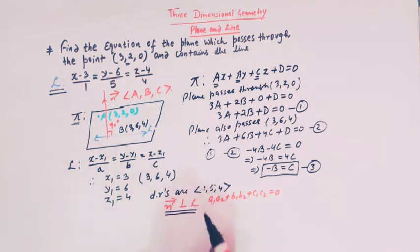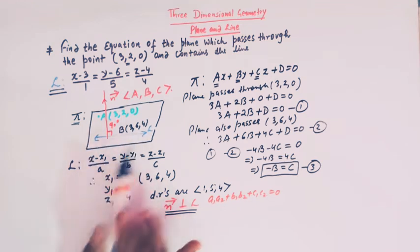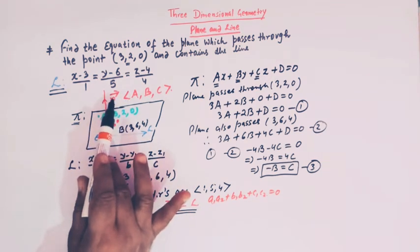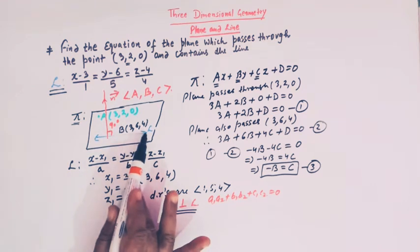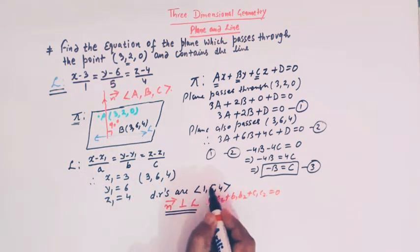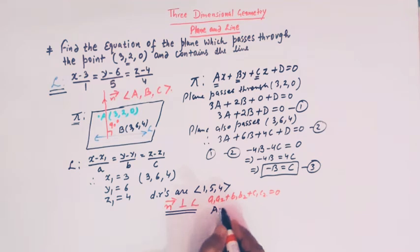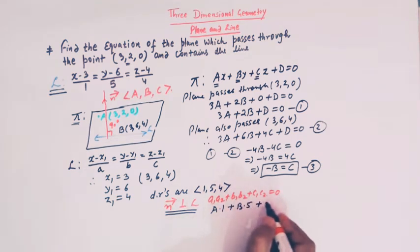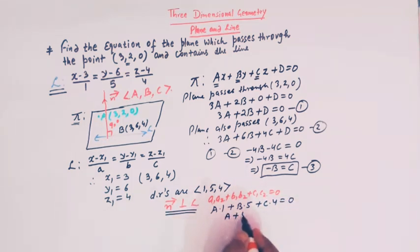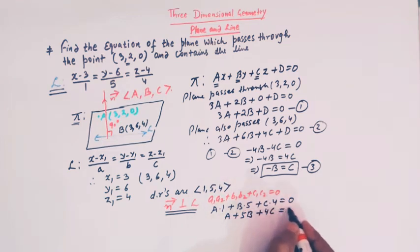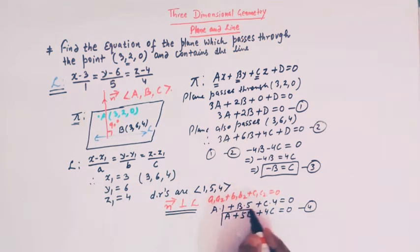Now applying the perpendicularity condition between the normal and line l: the direction ratios of the normal are A, B, C and the direction ratios of the line are 1, 5, 4. So A·1 + B·5 + C·4 = 0, giving A + 5B + 4C = 0. This is equation 4.